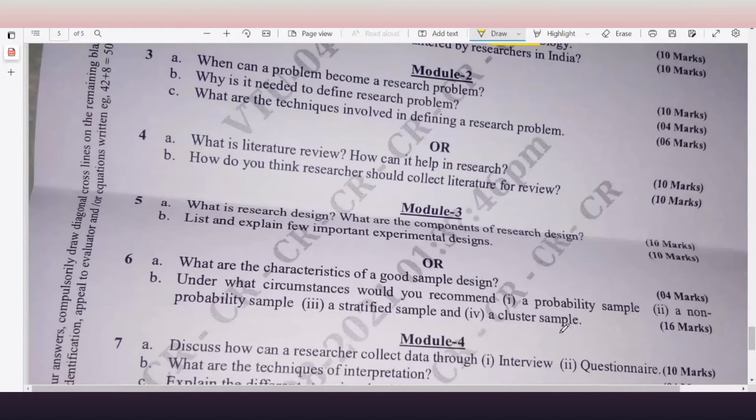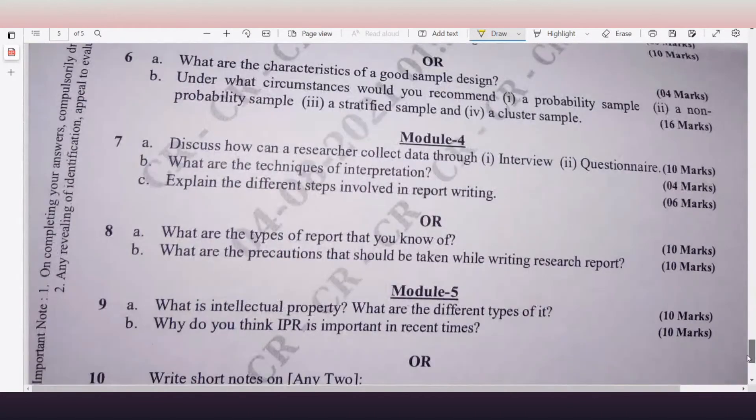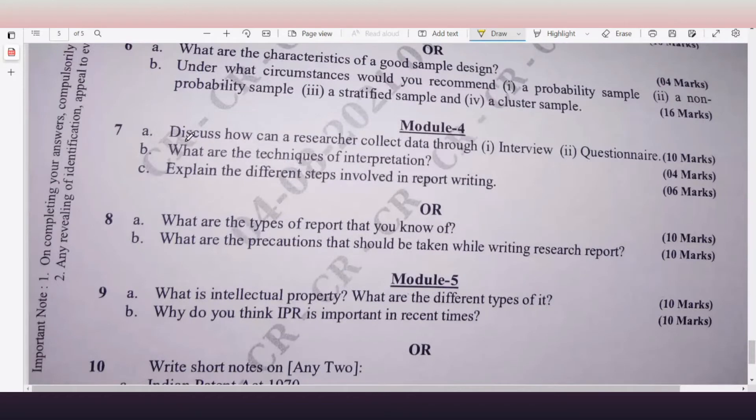And then comes Module 4. 7a: Discuss how can a researcher collect data through interview. 10 marks. Very easy question, guys. 7b: What are the techniques of interpretation? 4 marks. Techniques they are asking. 7c: Explain the different steps involved in report writing, 6 marks.